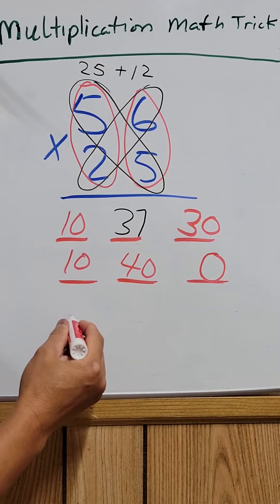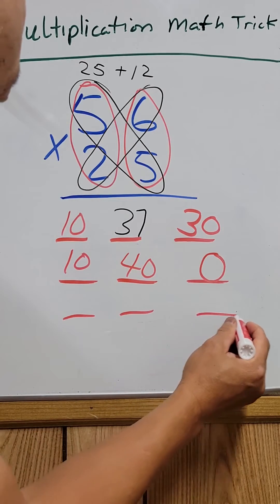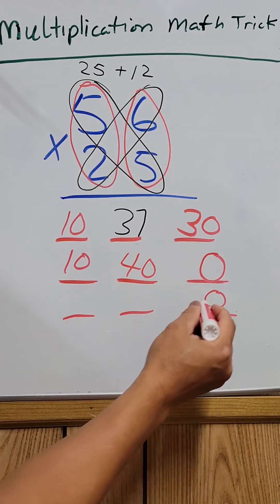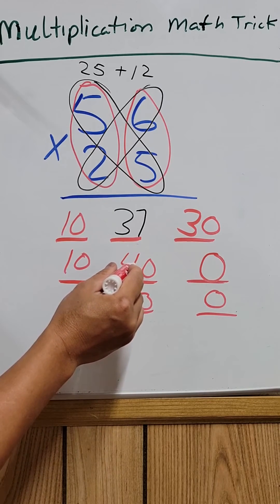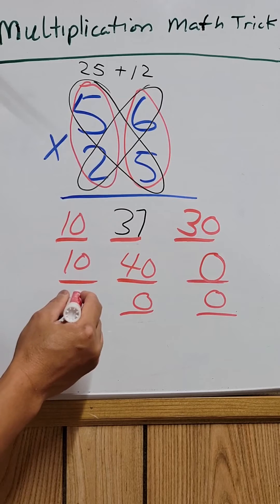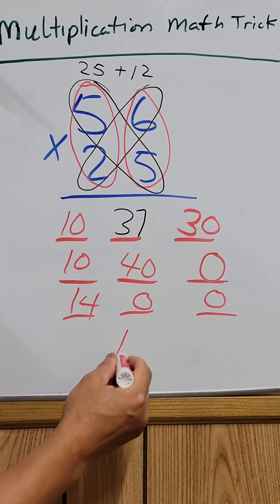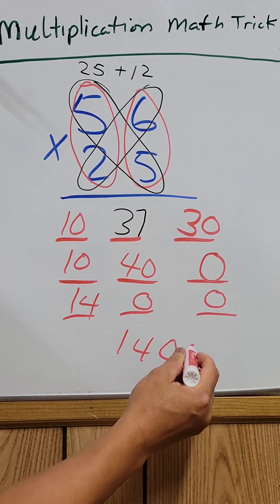And then one more step. The 0, you drop down. And the 4, you add it to the 10 will be 14. So your answer is 1400.